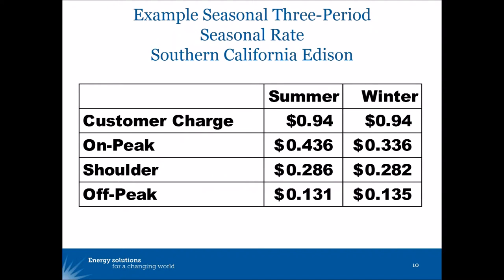Here we see an example of a seasonal three-period rate, which is just an additional twist on the Arizona Public Service example. This one comes from Southern California Edison. Again, there are different volumetric energy rates depending on whether the customer uses energy on-peak, off-peak, or in-between — what we call the shoulder. But those rates are higher in the summer than in the winter.